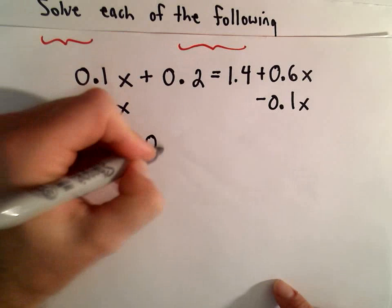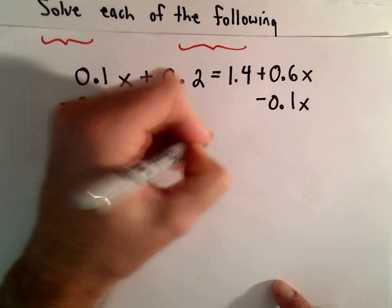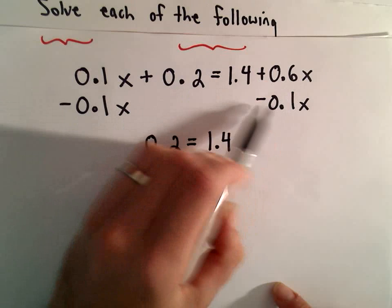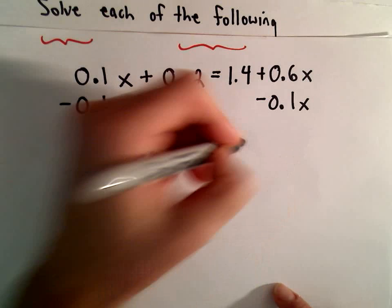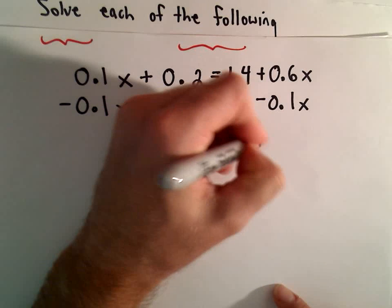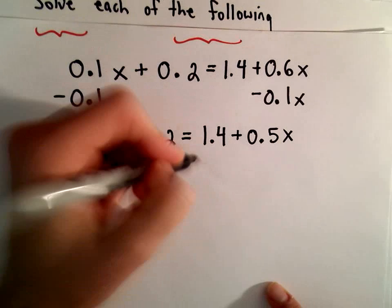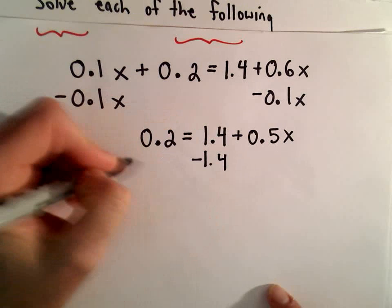So on the left, we have 0.2 equals 1.4, well, 0.6x minus 0.1x will leave us with a positive 0.5x. And now I'm going to subtract 1.4 from both sides.